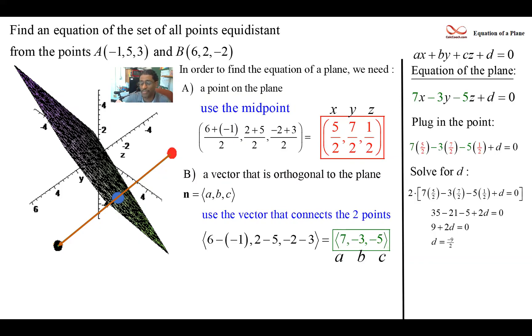Collecting those constants, we'll have a nine, positive nine. And solving for D, then we'll subtract that nine over, divide by the two, and we'll find out that D is equal to negative nine halves.